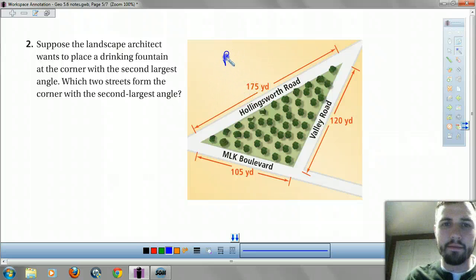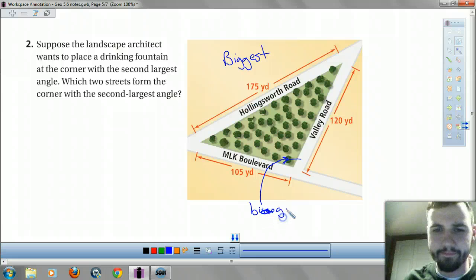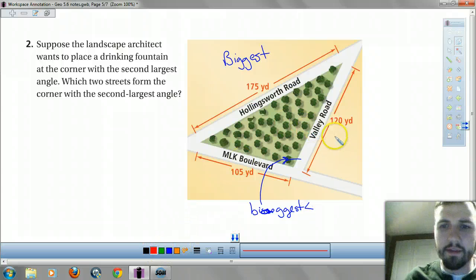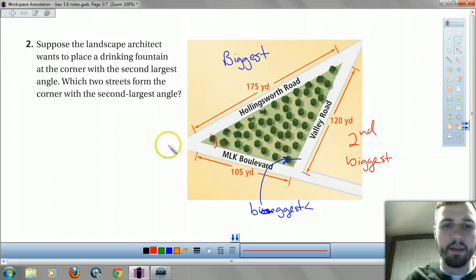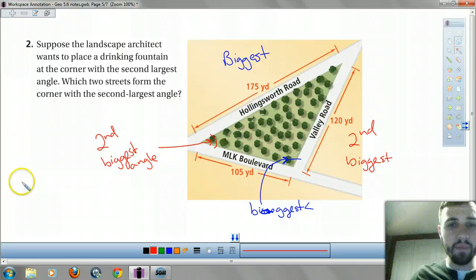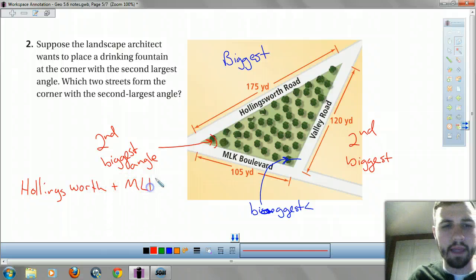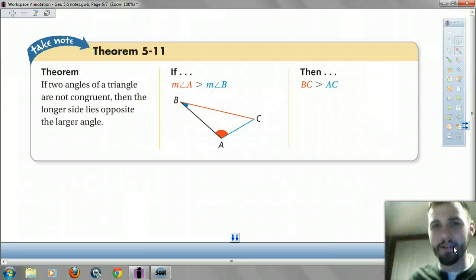So, this is my biggest side, right? So, the angle across from Hollingsworth Road, that means this is the biggest angle. This is my second biggest side, right? So, that means this, the one across from it, is going to be my second biggest angle. So, the answer is, what two streets form that? Well, it'd be Hollingsworth and MLK. Probably the same for Martin Luther King. I'm sorry, guys. This light, there's a light right here that gets in my eyes. Maybe I'll have to ask someone to help me fix that and turn that off.